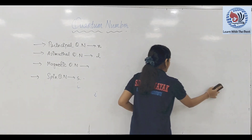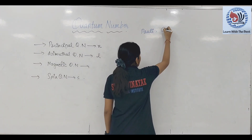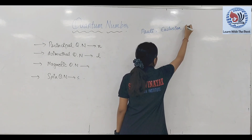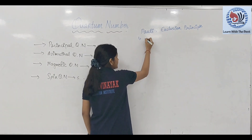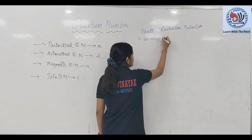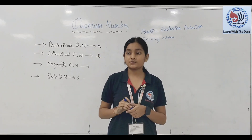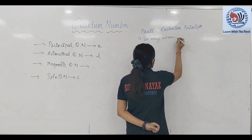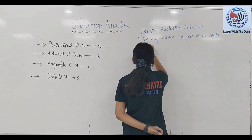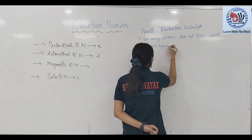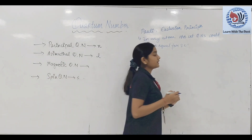इसके बाद एक principle आया — Pauli Exclusion Principle। जिसमें इन्होंने कहा कि in any atom, the set of quantum numbers for two electrons could not be the same। कोई भी 2 electrons अगर किसी भी single atom में present हैं, तो उनके quantum numbers का set कभी भी equal नहीं हो सकता।